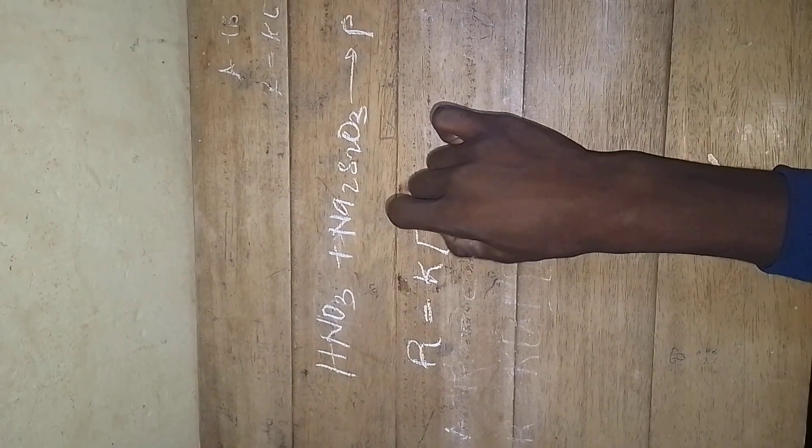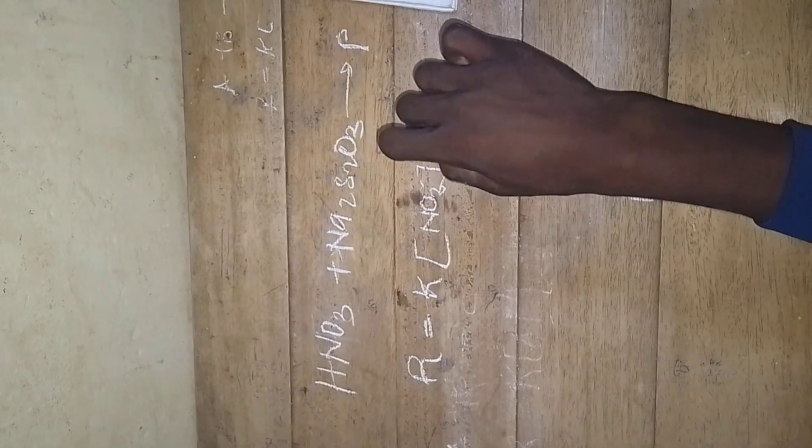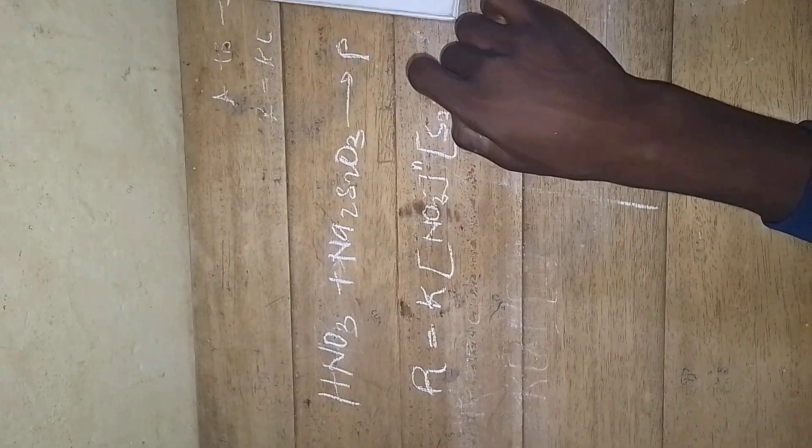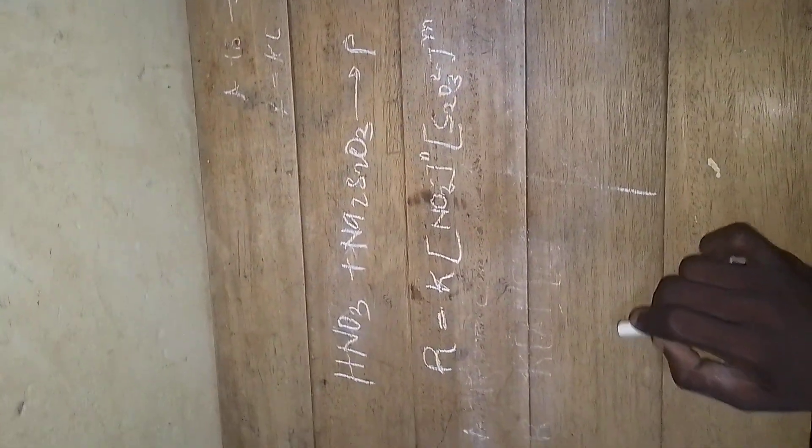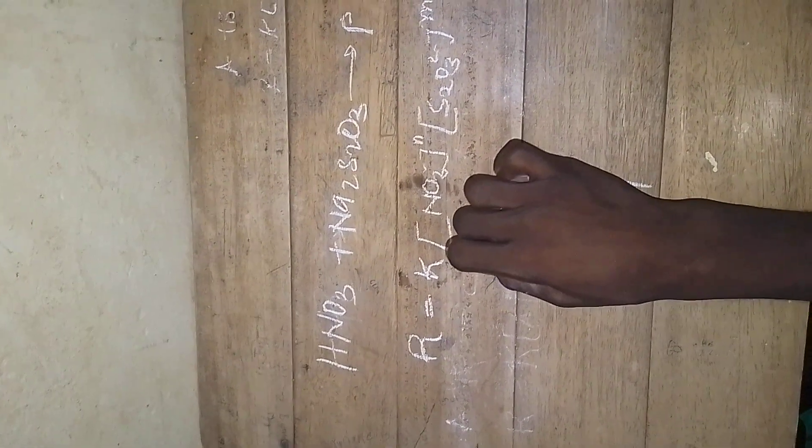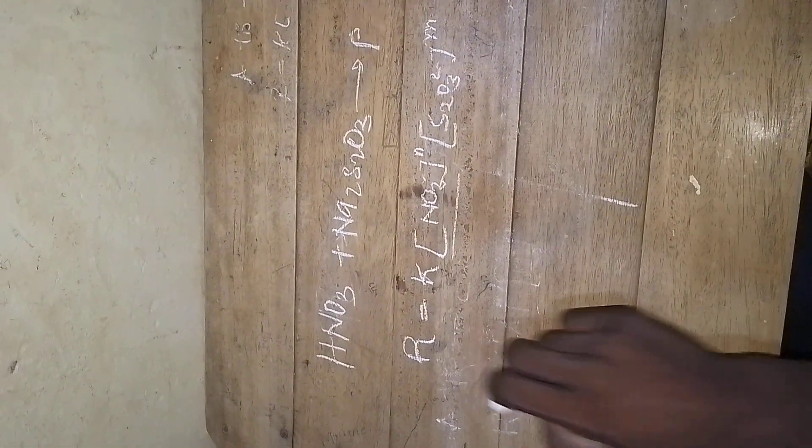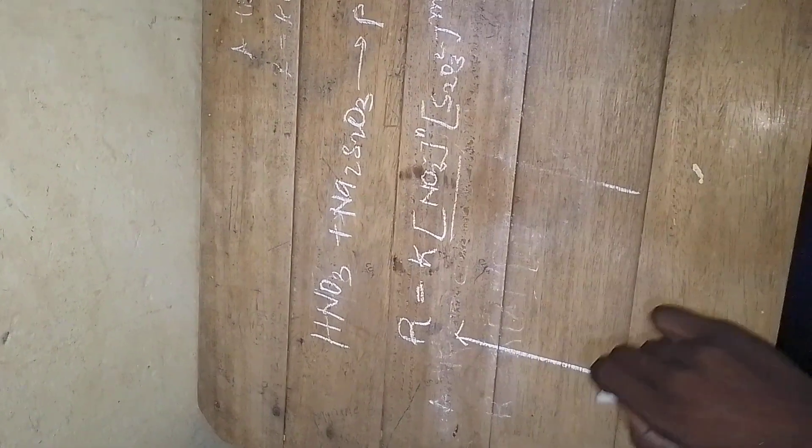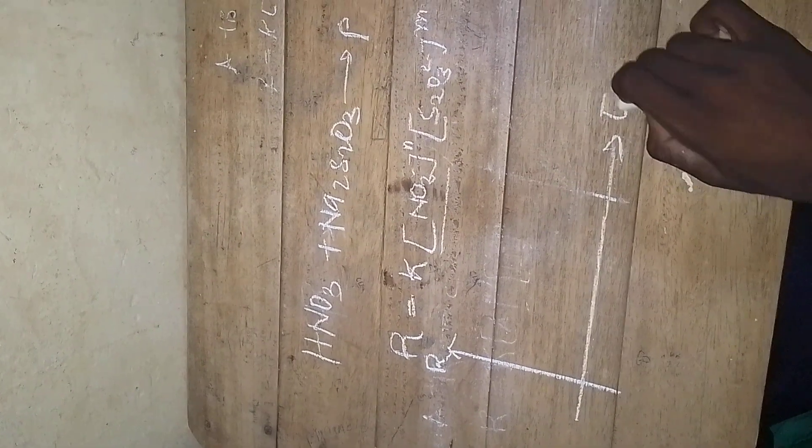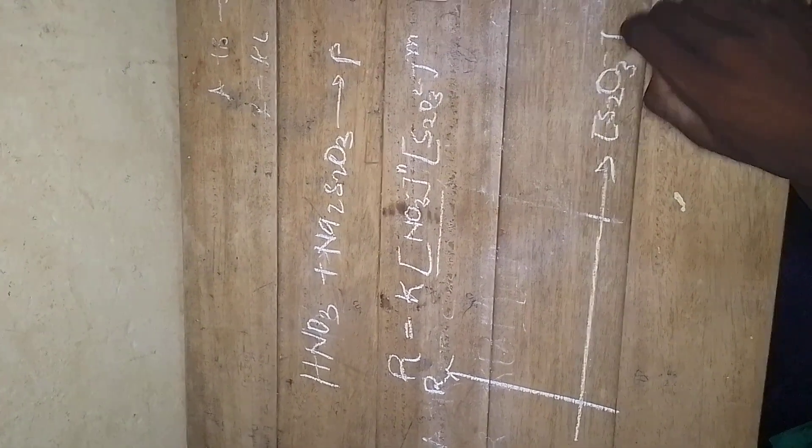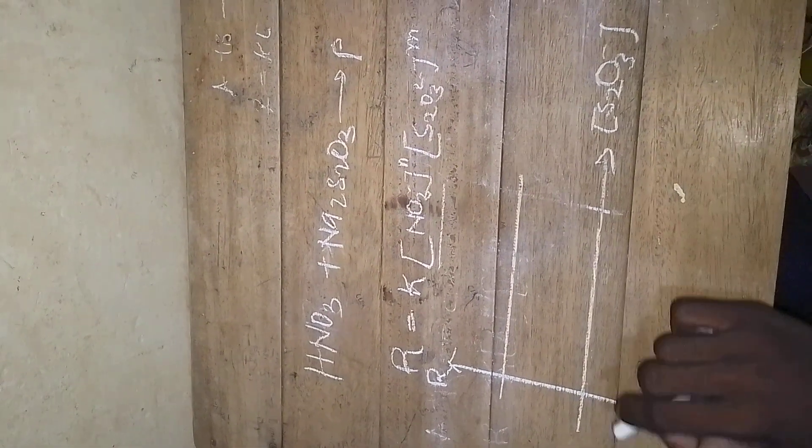The rate constant times the concentration of the nitrate ion to its order times the concentration of the thiosulfate ion to its order. I can call the order m. Since the concentration of nitric acid was constant throughout the experiment, if you want to plot a graph of the rate against the concentration of sodium thiosulfate, if it is a straight line graph horizontally, it therefore means that the order of this reaction is zero.